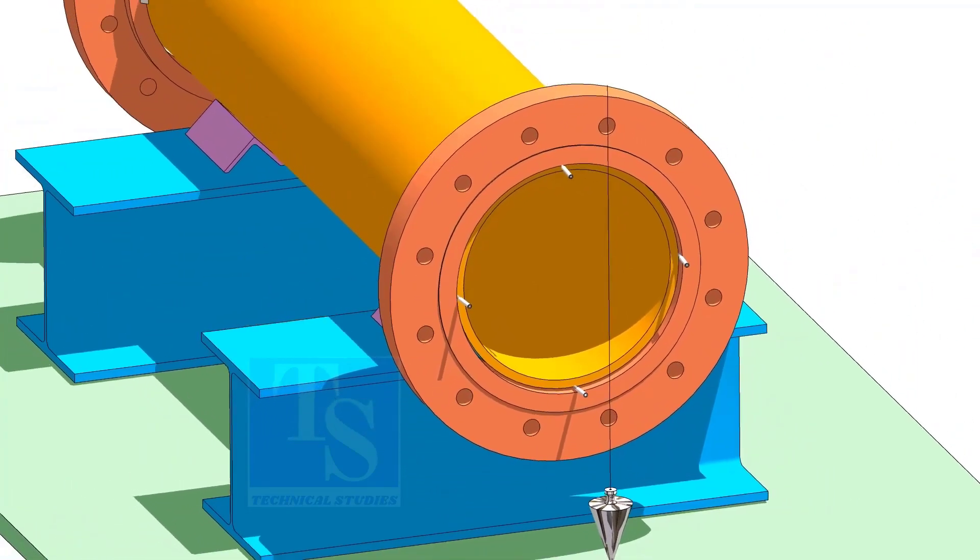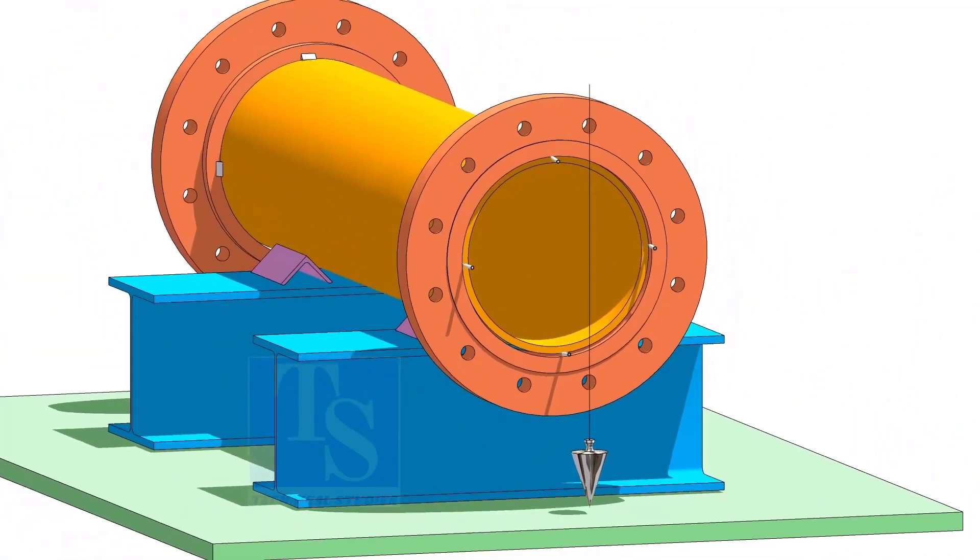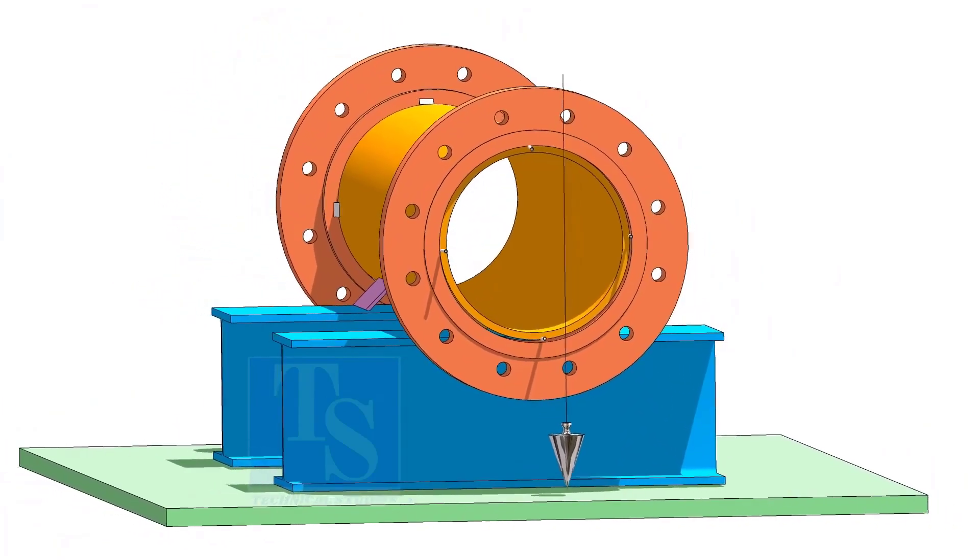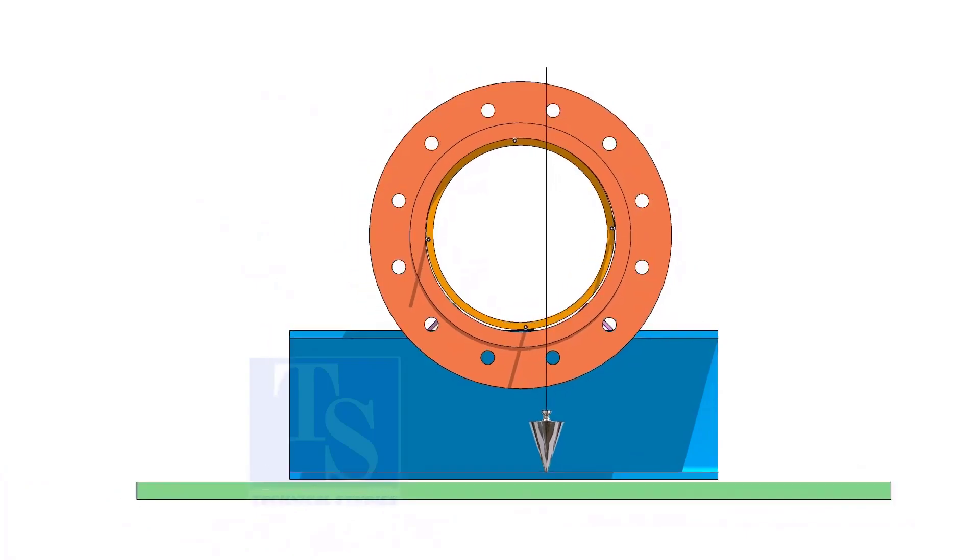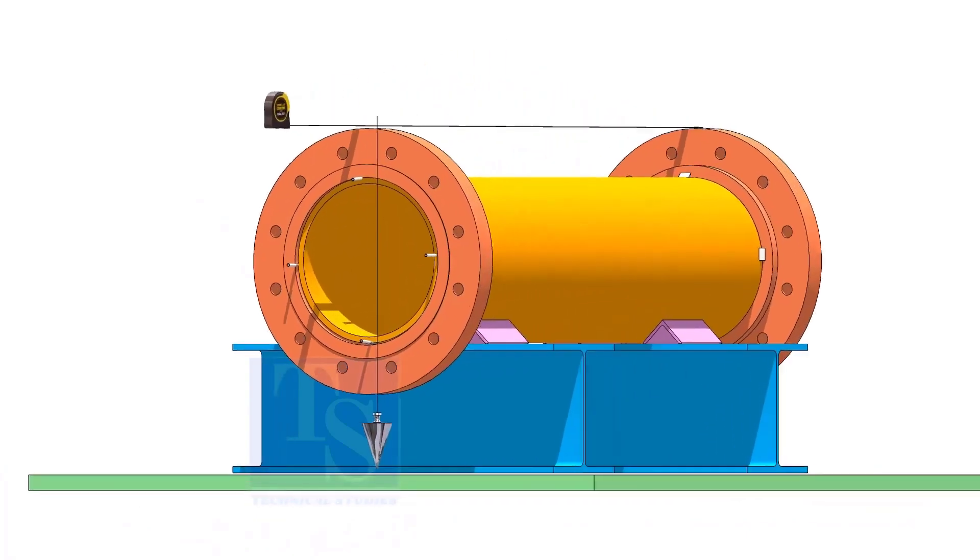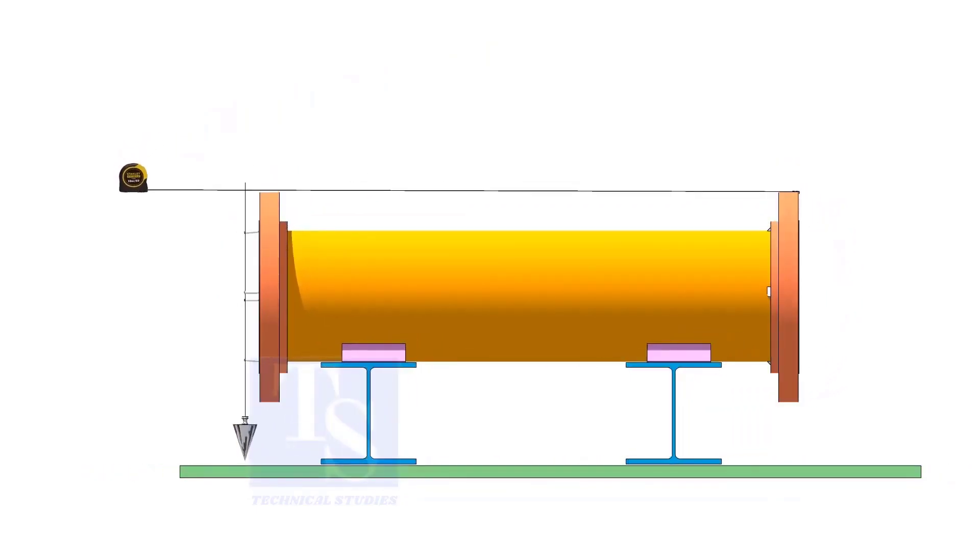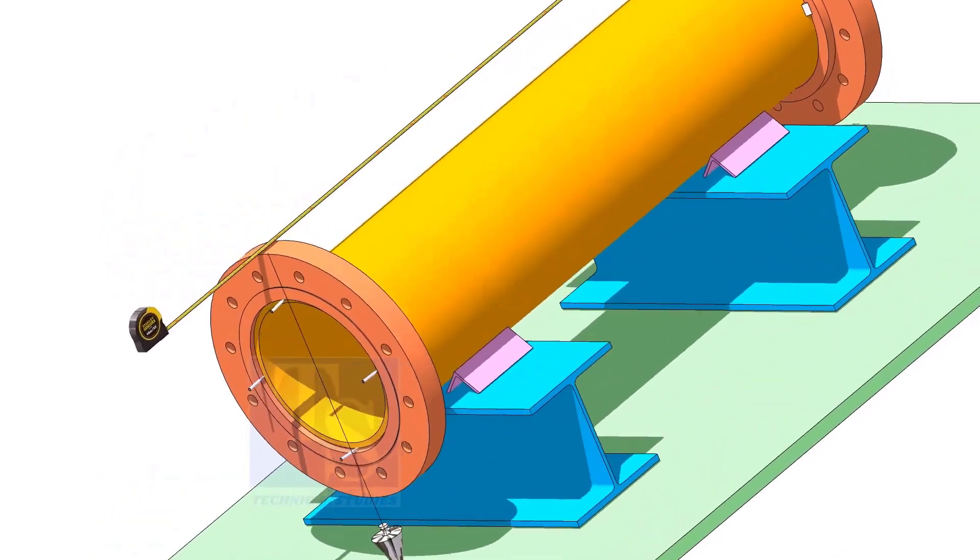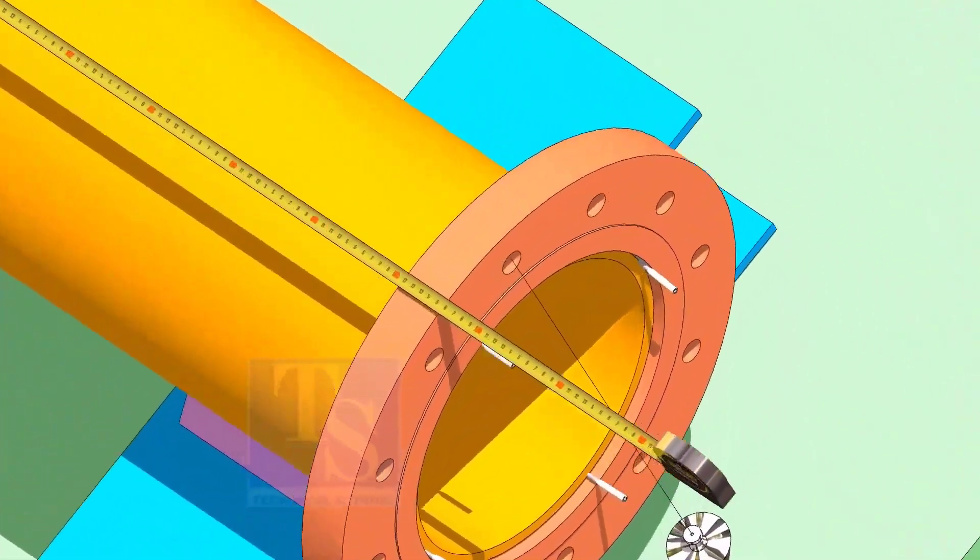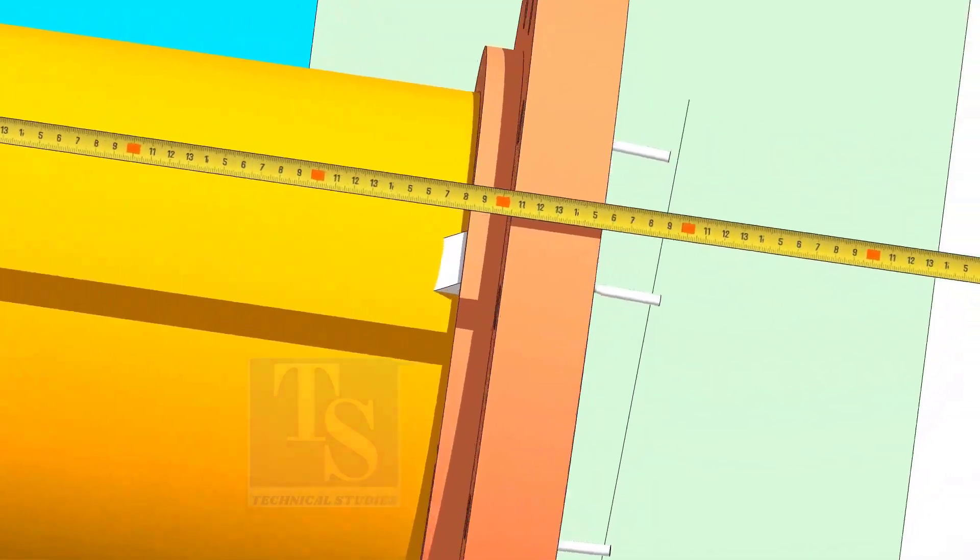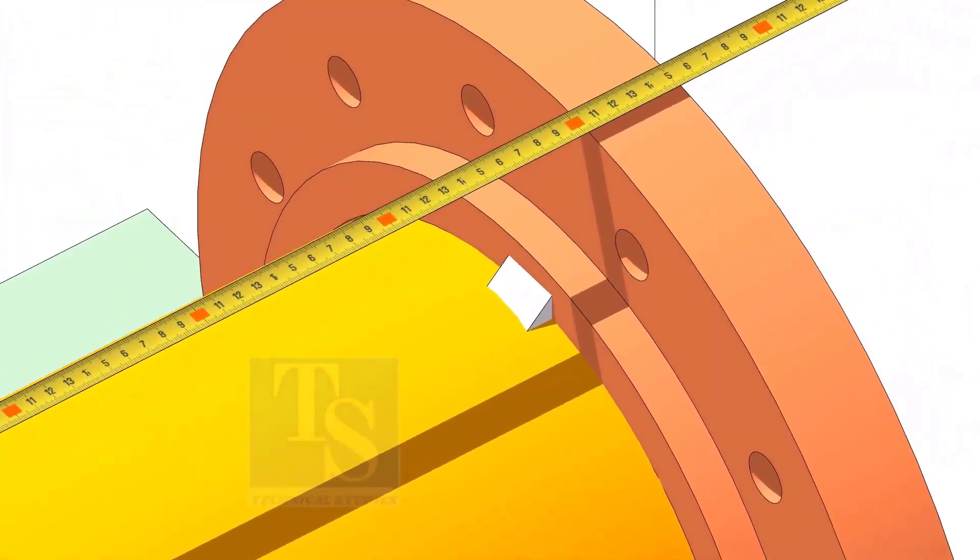Correct the plumbness. Now, make sure the length of the pipe spool is as per the drawing. Tack weld on the top side and repeat the steps we have done on the first flange.